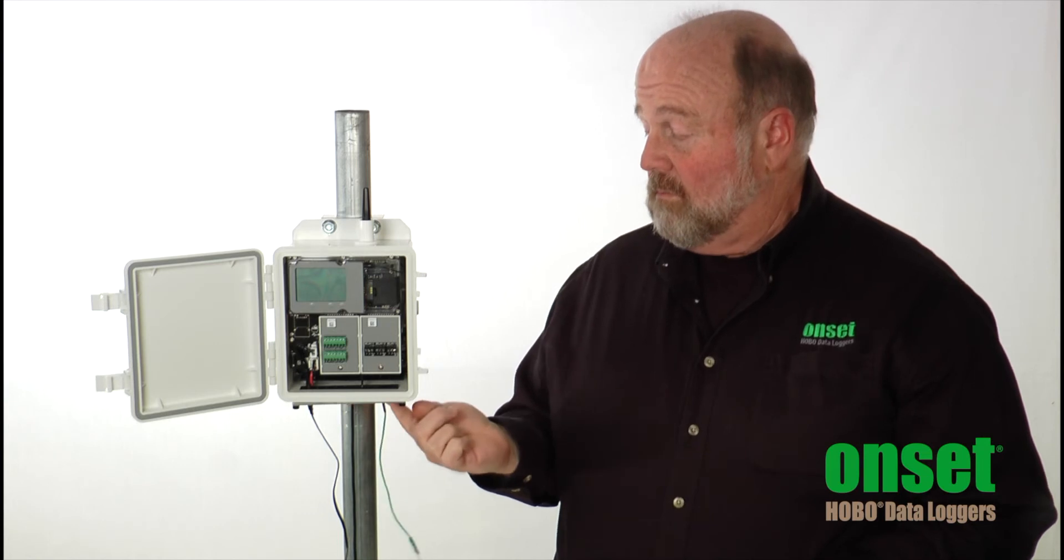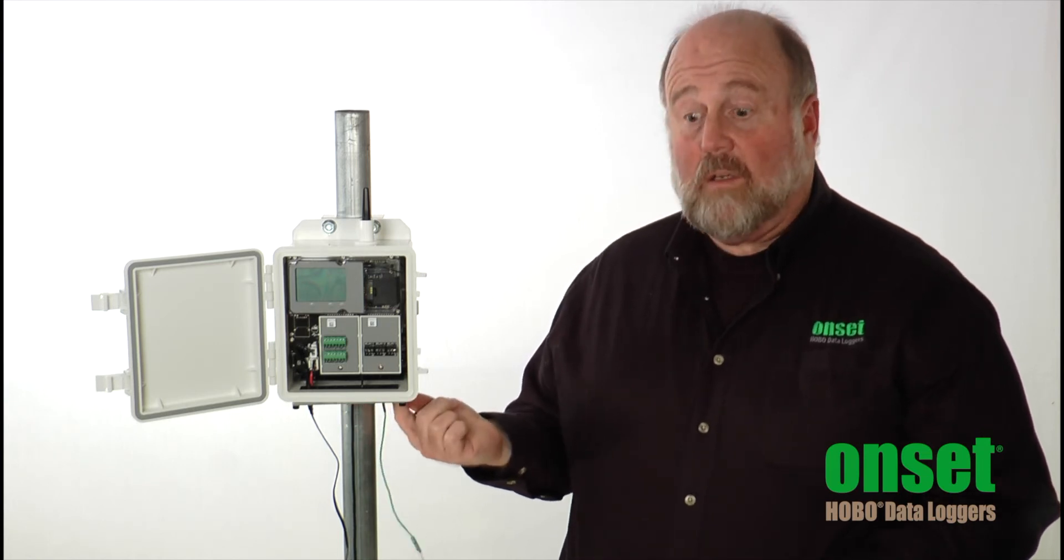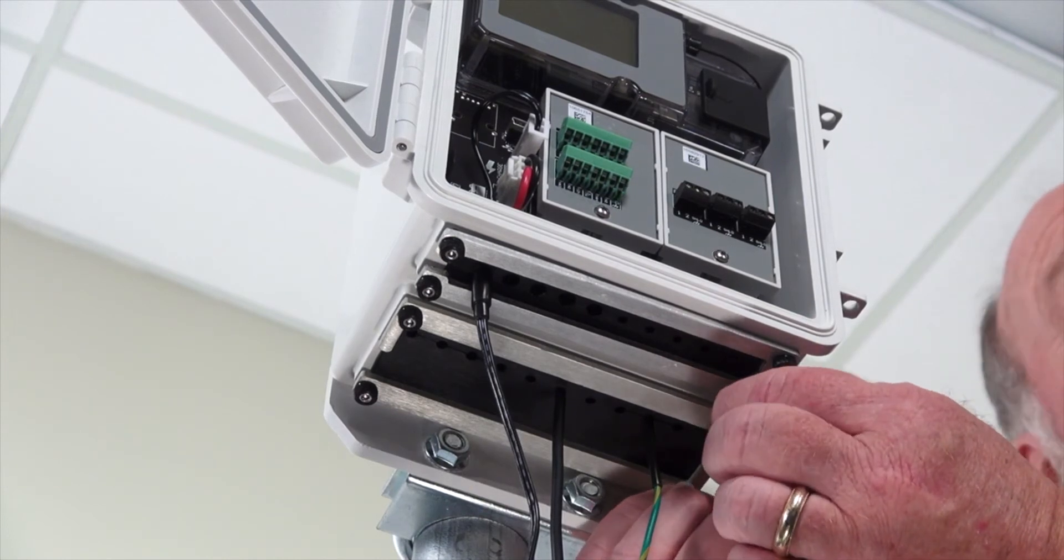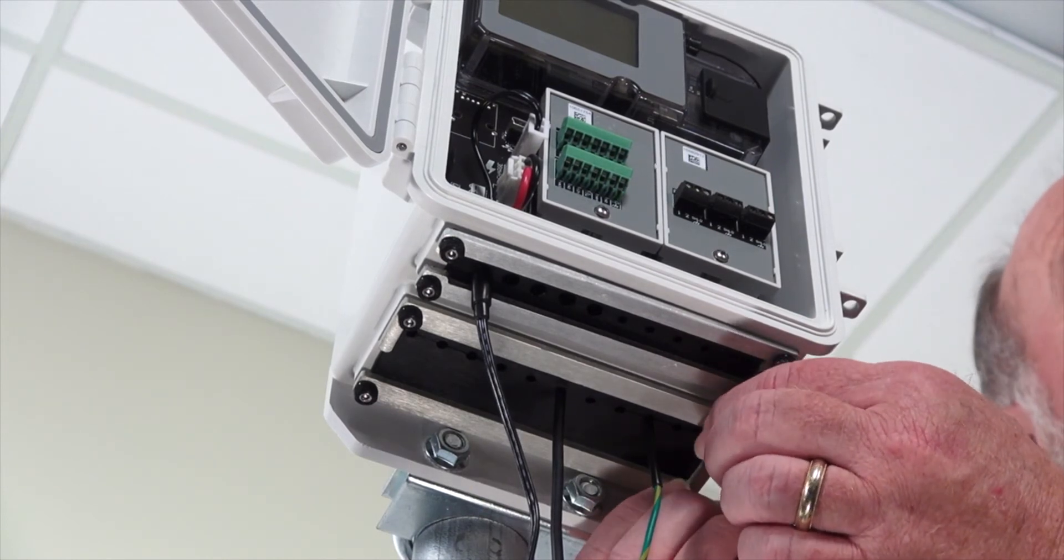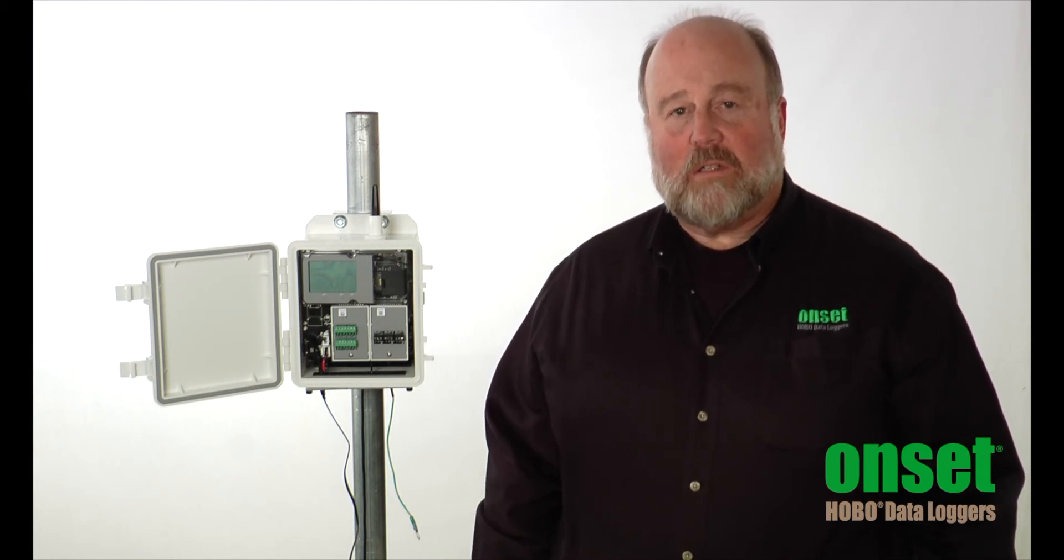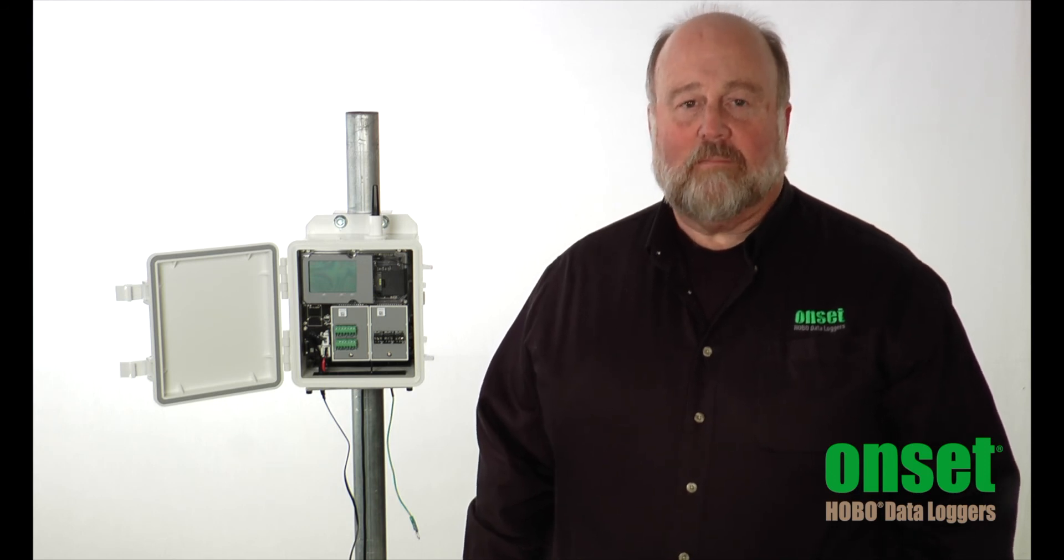Once all of those empty holes are filled with the plugs, use your fingers and the enclosed allen wrench to snug down the clamps. For more information about how to install the cable channel kit in the RX3000, please refer to your RX3000 user manual. Thank you.